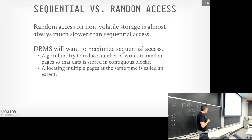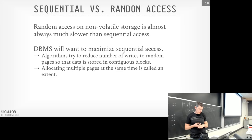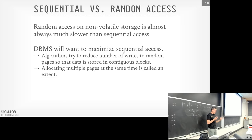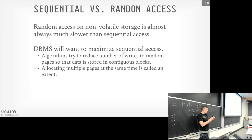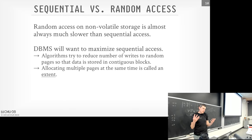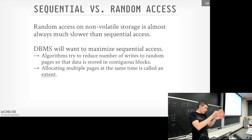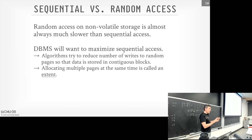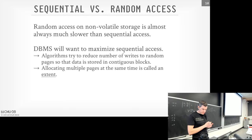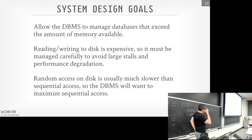SSDs also have an asymmetry: reads are much faster than writes, which is less of an issue on spinning disks. To maximize sequential storage layout, when we allocate pages on disk we try to allocate large chunks at a time — an 'extent' — so the OS tries to write them out sequentially. Rather than allocating 4KB at a time, we might allocate a megabyte, and yes there's some unused space, but storage is cheap. That increases the likelihood that our data is laid out sequentially.